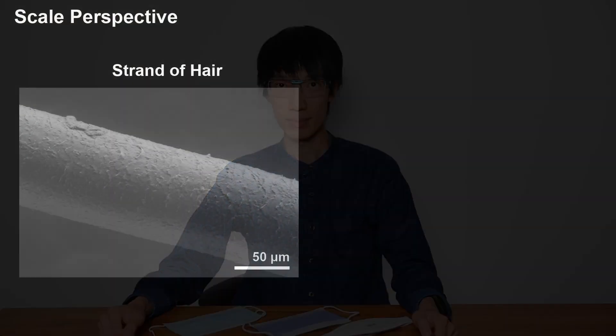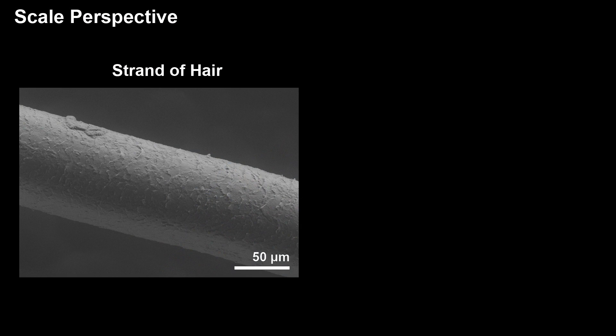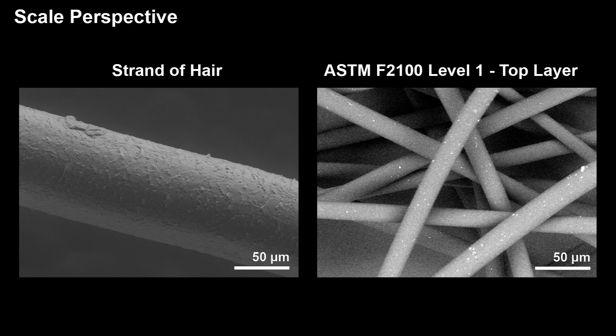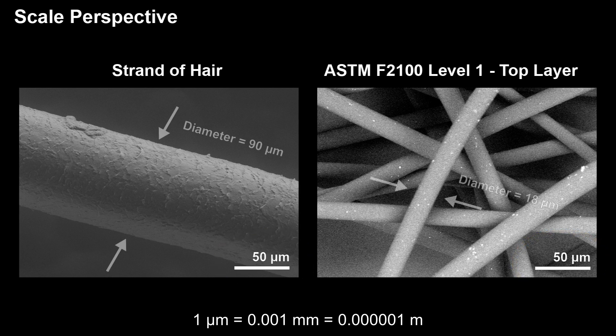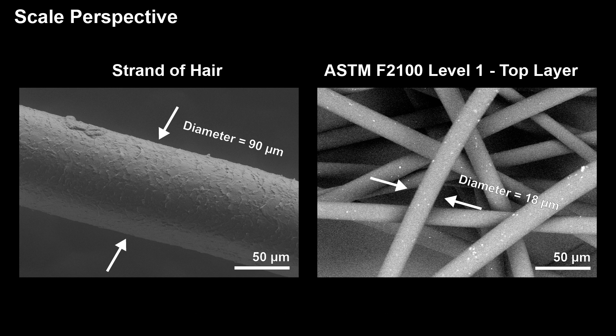Let's look at images of the masks obtained from scanning electron microscopy. To give you a sense of scale, I have an image of a strand of human hair on the left and the top layer of the level 1 mask on the right, both taken at the same magnification. The scale bar on both images is 50 microns. As you can see, the diameter of the human hair is 19 microns while the diameter of a strand of fiber in the mask is 18 microns — a strand of hair is about the same thickness as one fiber on the top layer of the level 1 mask.